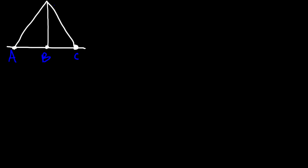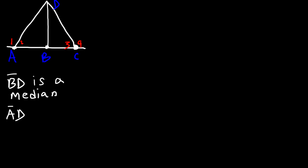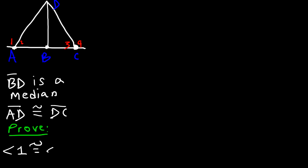Let's call this point A, B, C, and D. And let's say this is angle one, two, three, and four. Now we're given that BD is a median, and we're also given that AD is congruent to DC.